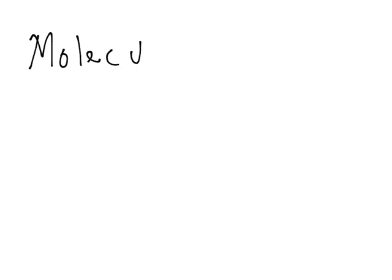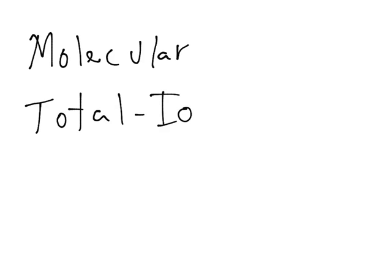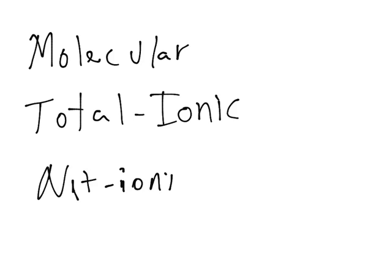In this video, I'll be solving practice problems on how to find the molecular, total ionic, and net ionic equations for reactions in aqueous solutions. I talked about the procedure in the previous video. The total ionic is that same molecular equation in its ionic form, where compounds are separated into their ions, and the net ionic is the simplest form without the spectator ions. If you want to review the procedure, go back to the previous video. But this video is just to solve practice problems.